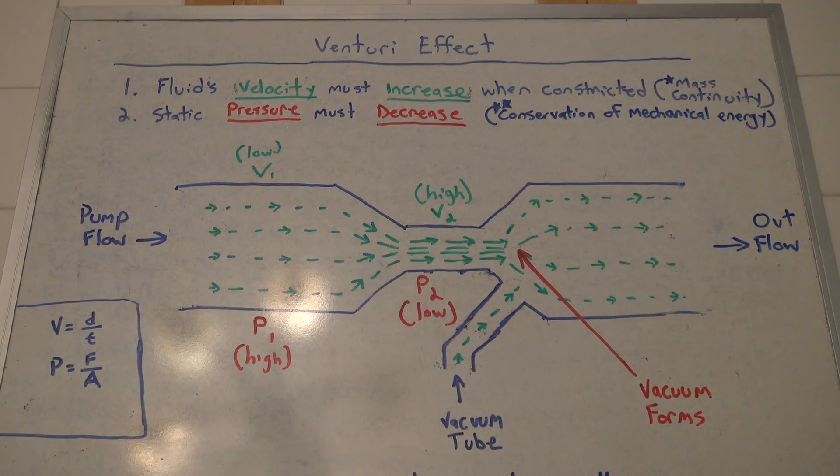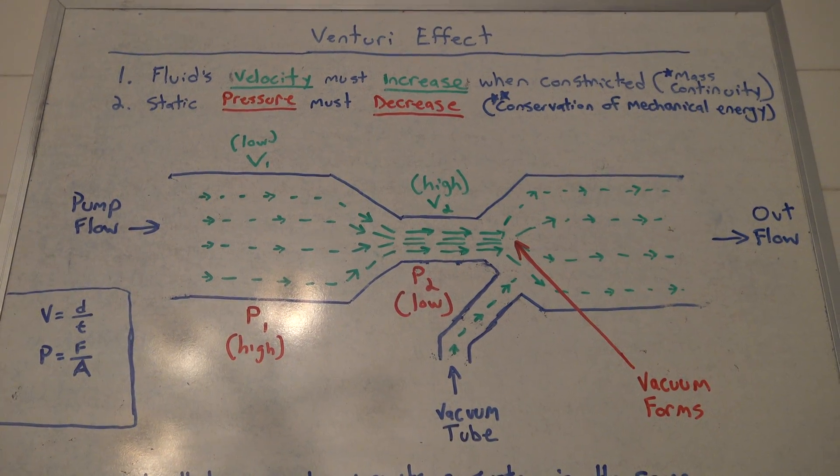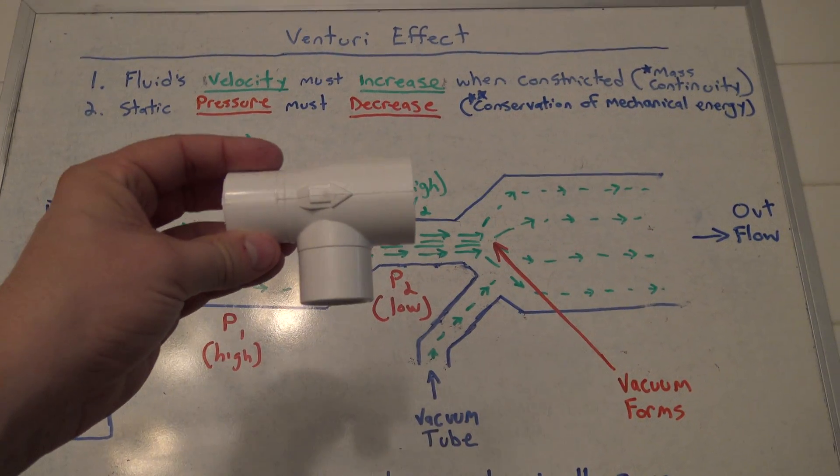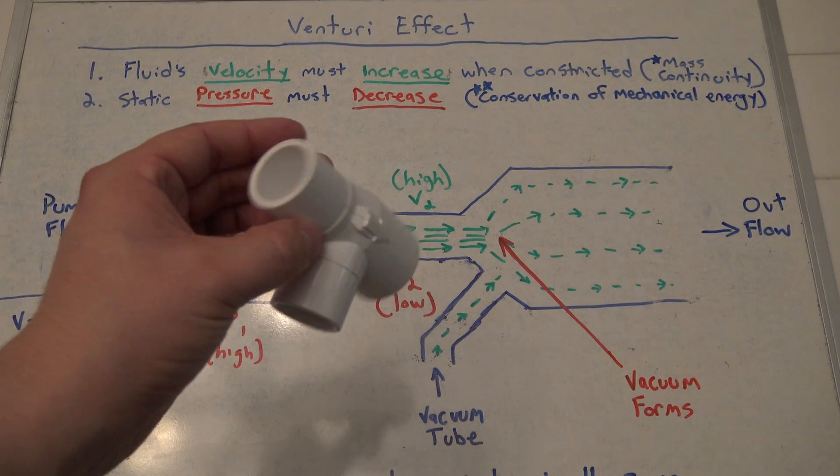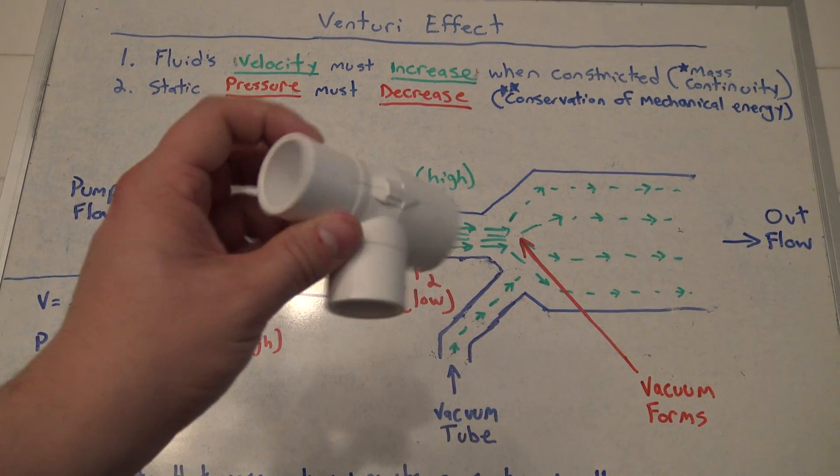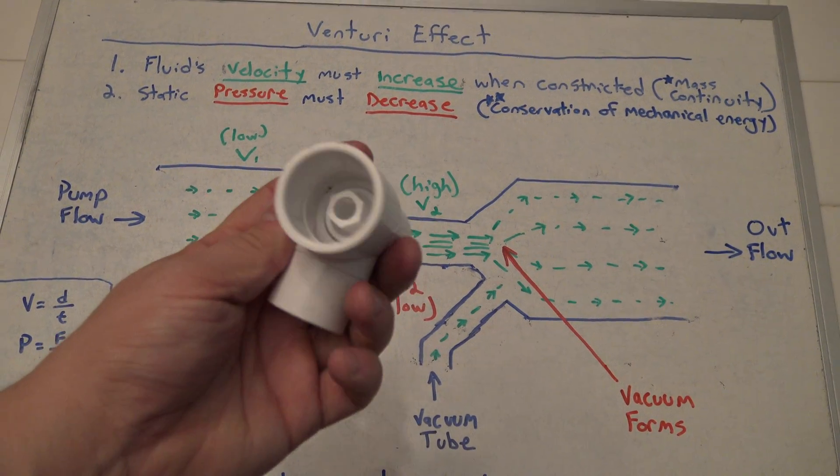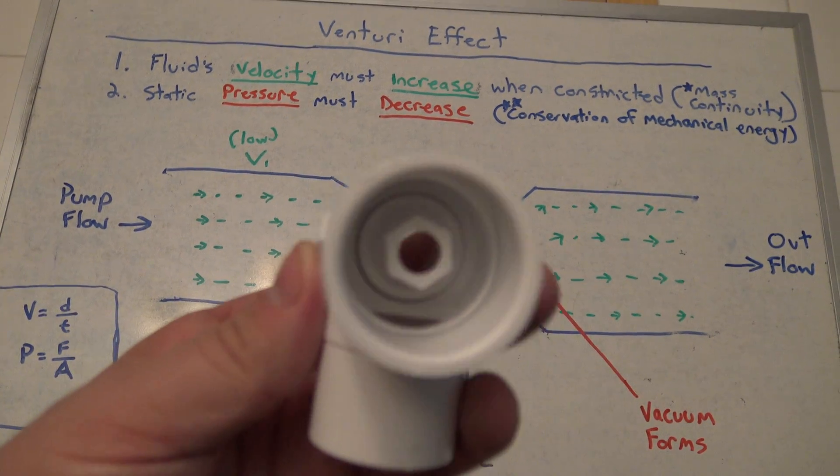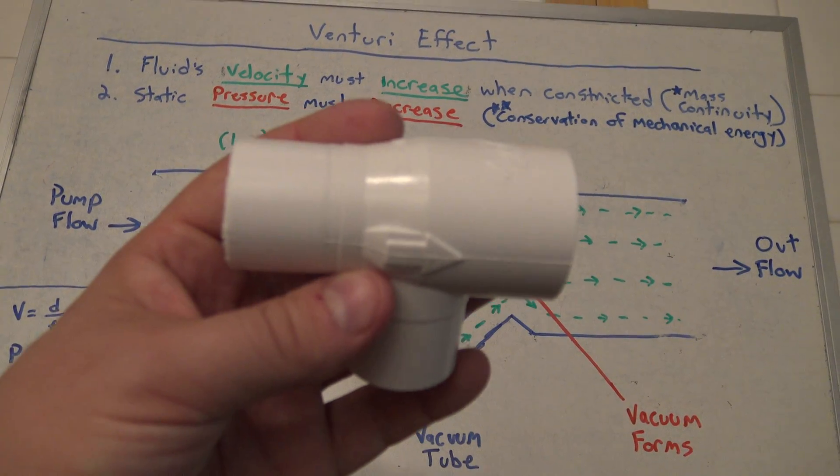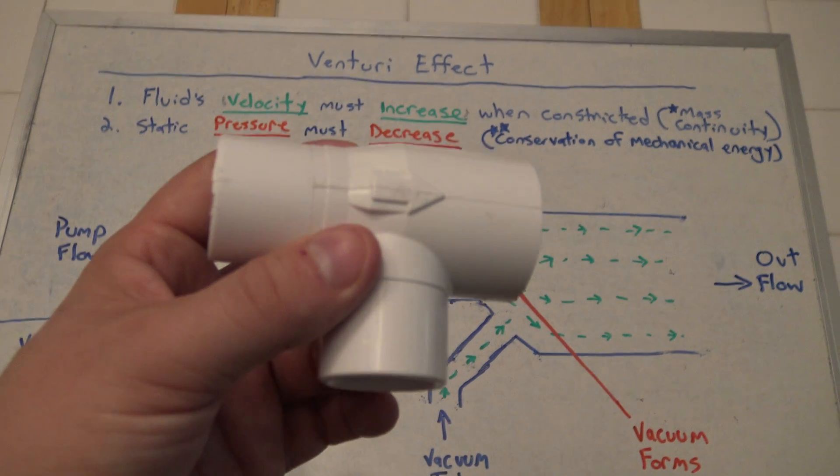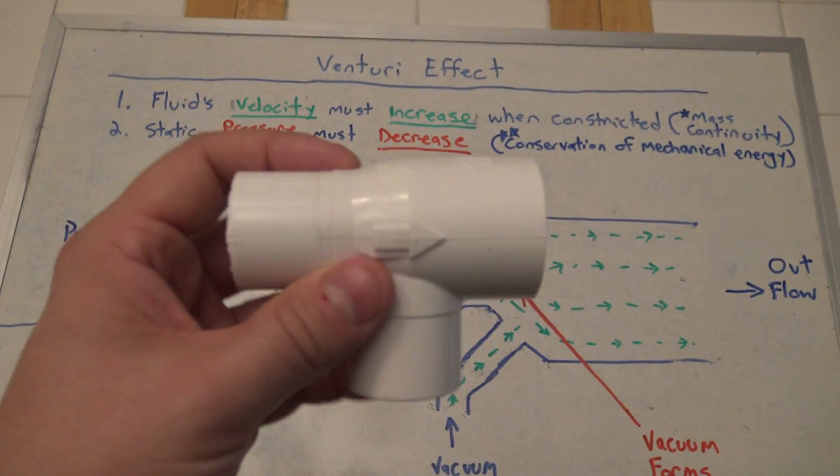...is this piece right here. This is a PVC tee which is actually a Venturi tee. So you would see this in like a pool or a spa type of setup.